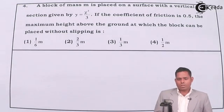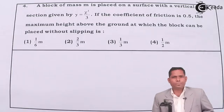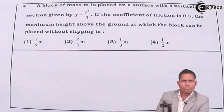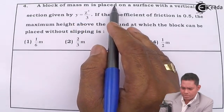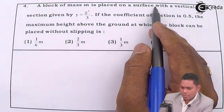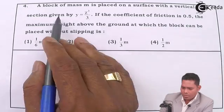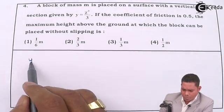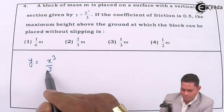Students, let us solve the next question. Question number 4 says a block of mass m is placed on a surface with a vertical cross section given by y equals x cubed by 3.